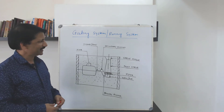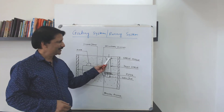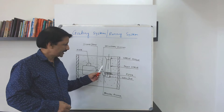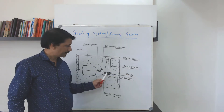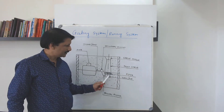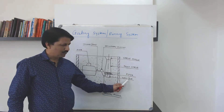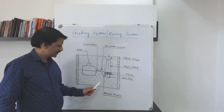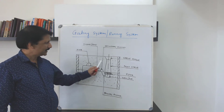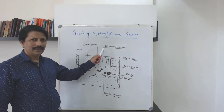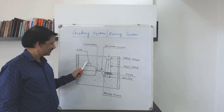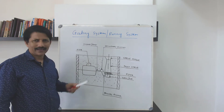The elements of the gating system are: the sprue basin, down sprue, filter, well or bowl, primary runner, secondary runner, ingate or gate, and riser.